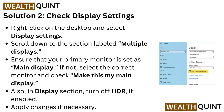Solution 2: Check Display Settings. Right-click on the desktop and select Display Settings. Scroll down to the section labeled Multiple Displays and ensure that your primary monitor is set as Main Display. If not, select the correct monitor and check Make This My Main Display. Also in the Display section, turn off HDR if enabled. Apply changes if necessary.